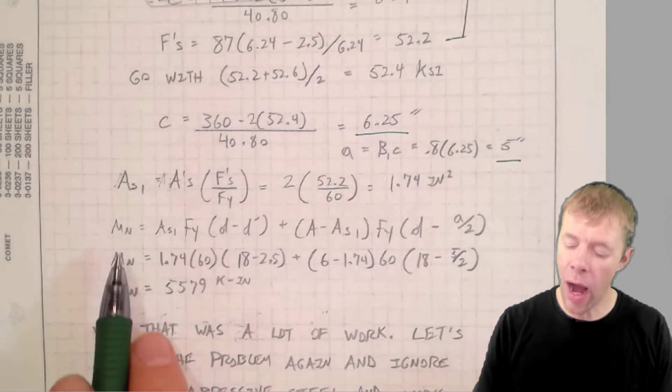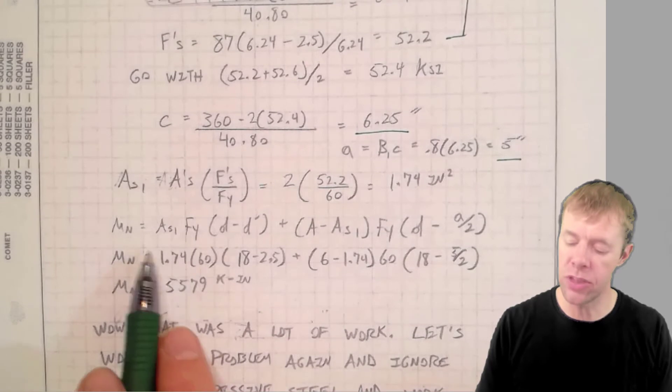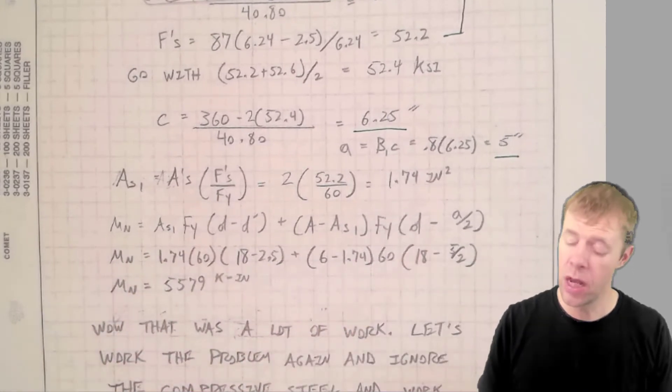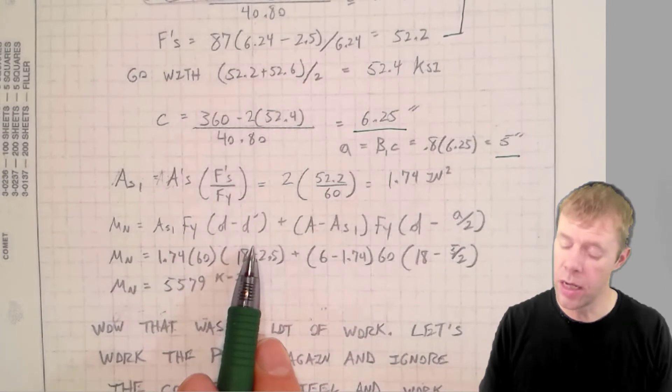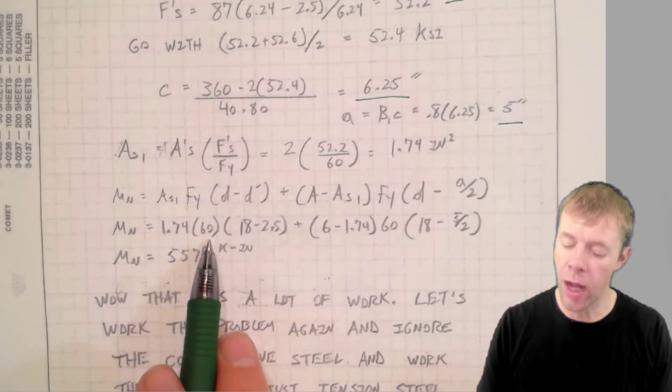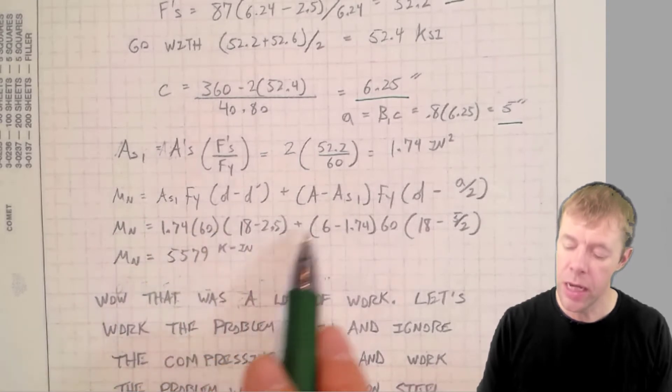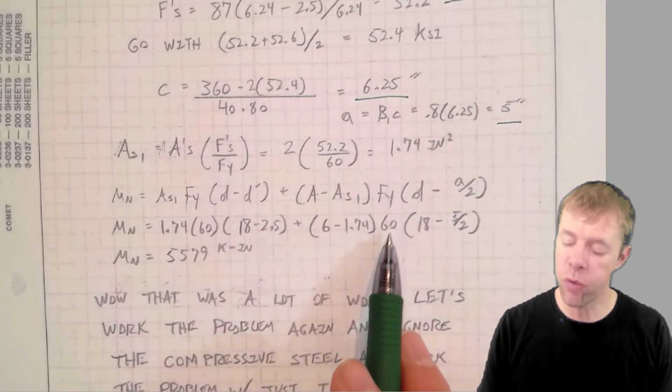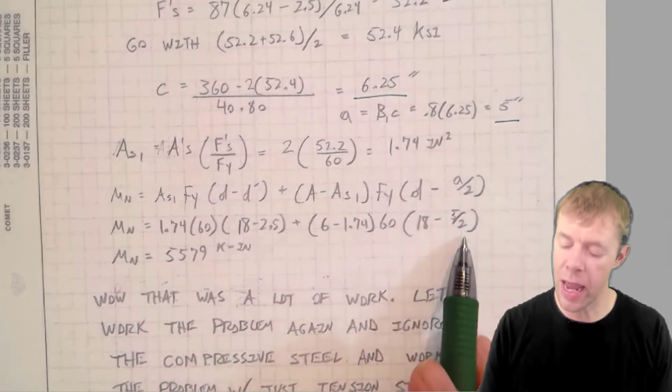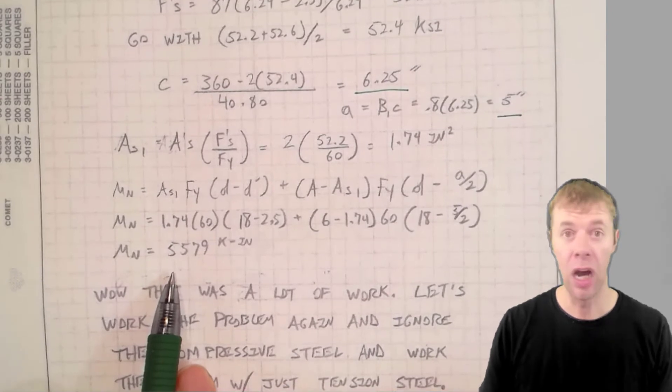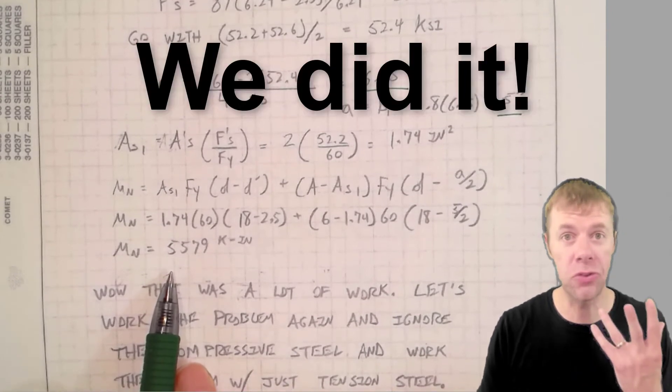And now I can find my moment. I'm going to use this big nasty equation. This combines the two subsets that we talked about in the theory part one. So I'm going to plug in everything I know here. My AS1, my FY, my D, my D prime. Here's my total A minus my AS prime. Here's my FY. There's my D. There's my A over two. And I get 55.79 kip inches. I'm done. We just did it. Awesome.